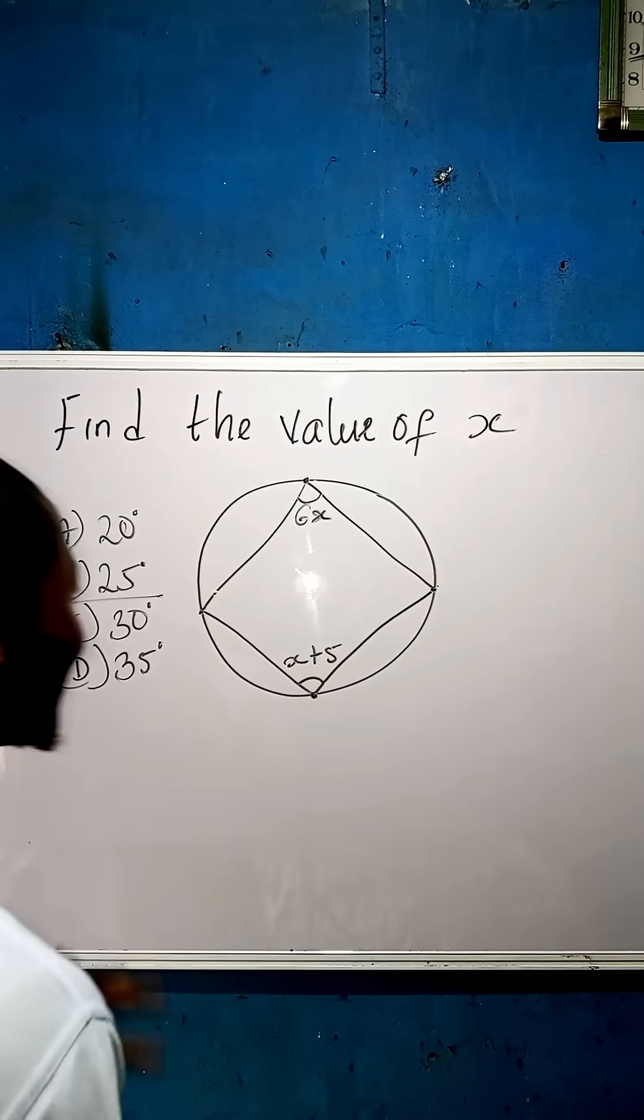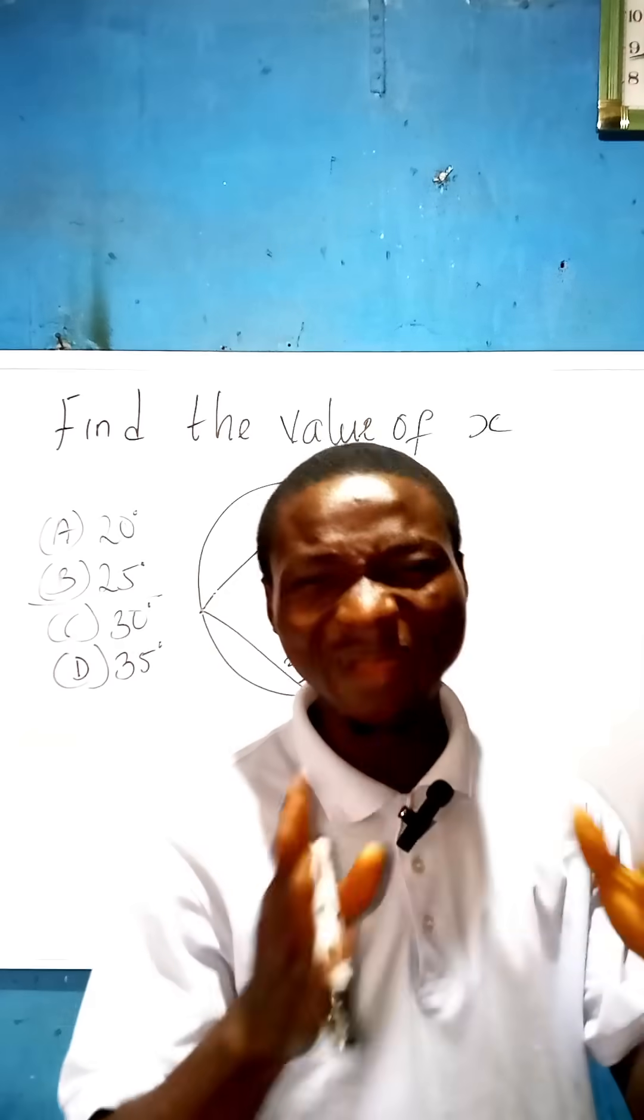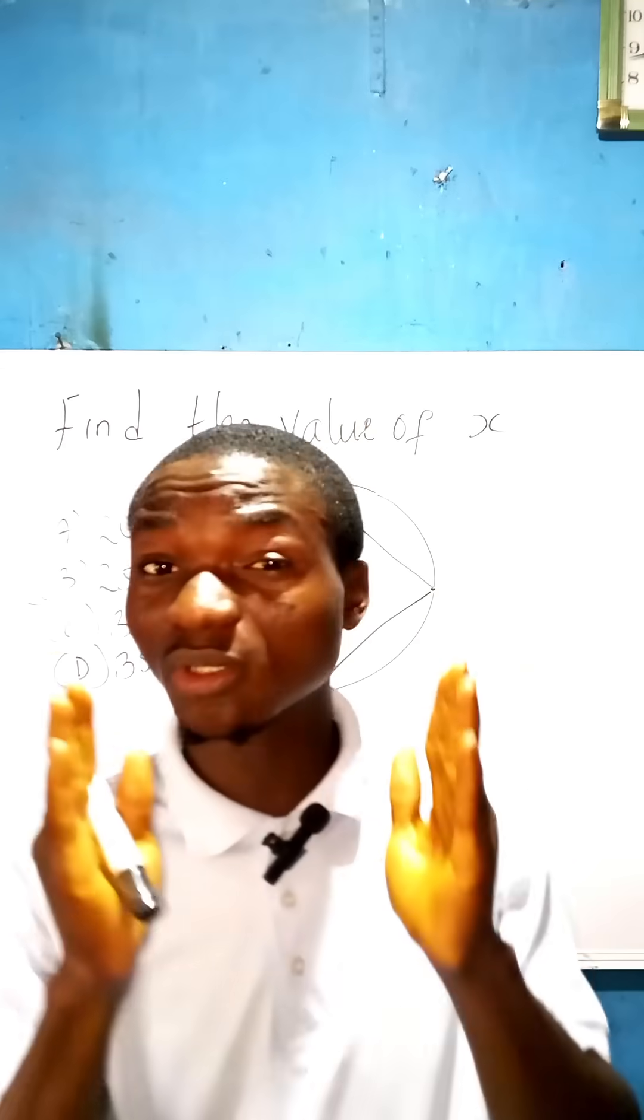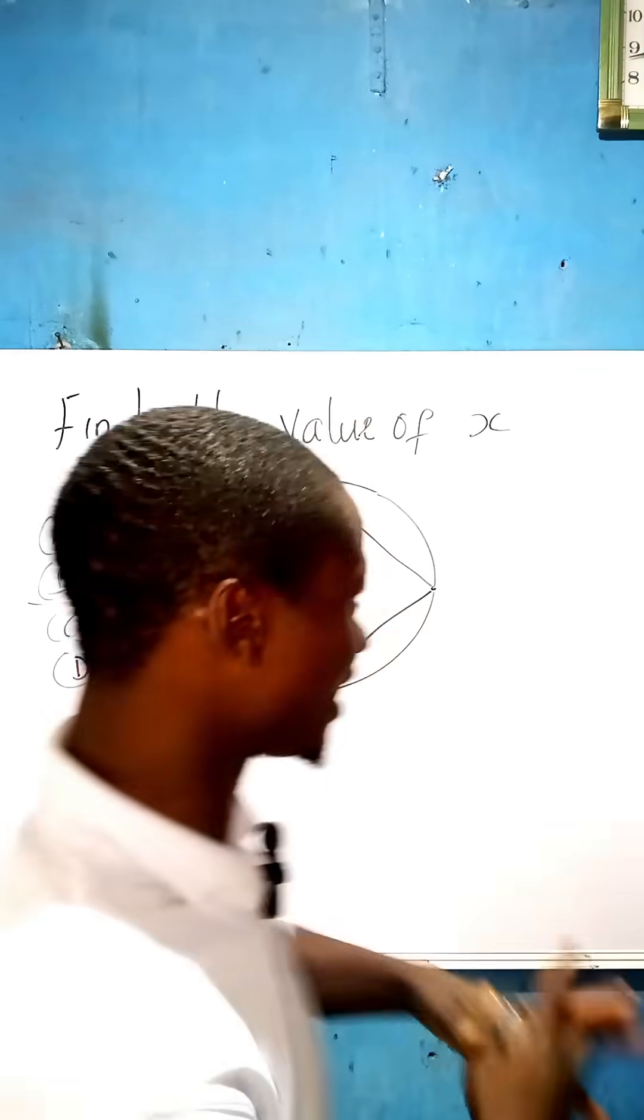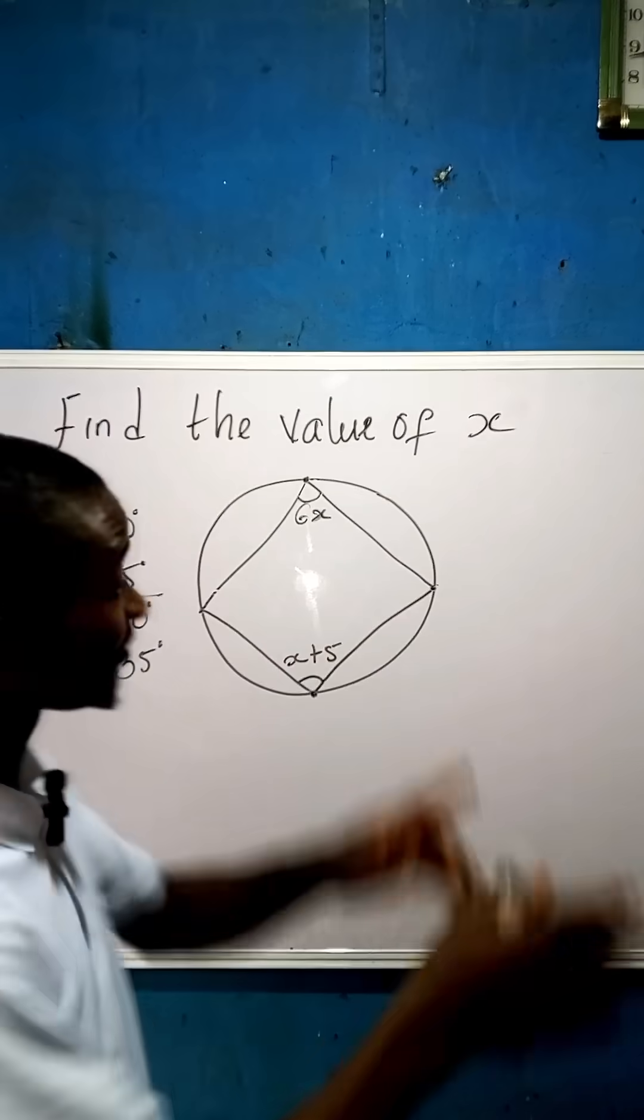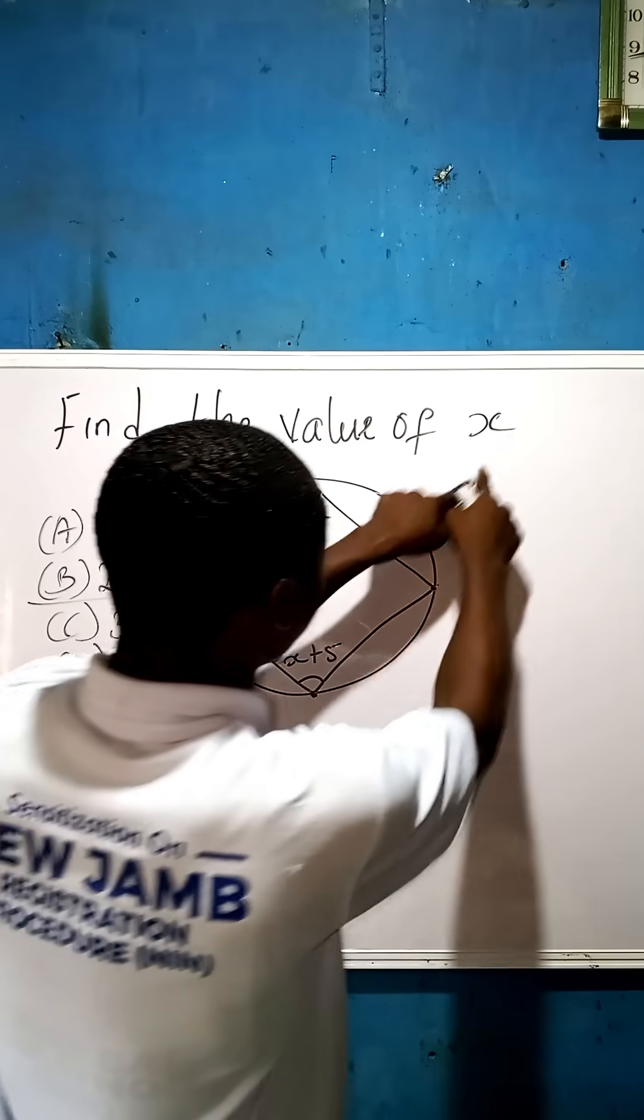Whenever you see a question like this, my friend, don't panic. Just go back to the theorem of circle, which says - remember the question says find the value of x.